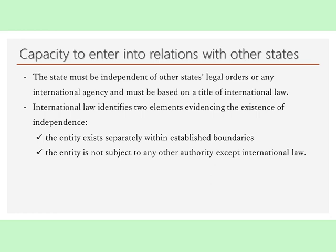Accordingly, if an entity has its own executive and other organs, conducts its foreign relations through its own organs, has its own legal system and nationality law, then there is prima facie evidence of statehood. External control through political and economic blackmail directed at weaker members of the international community does not affect statehood.